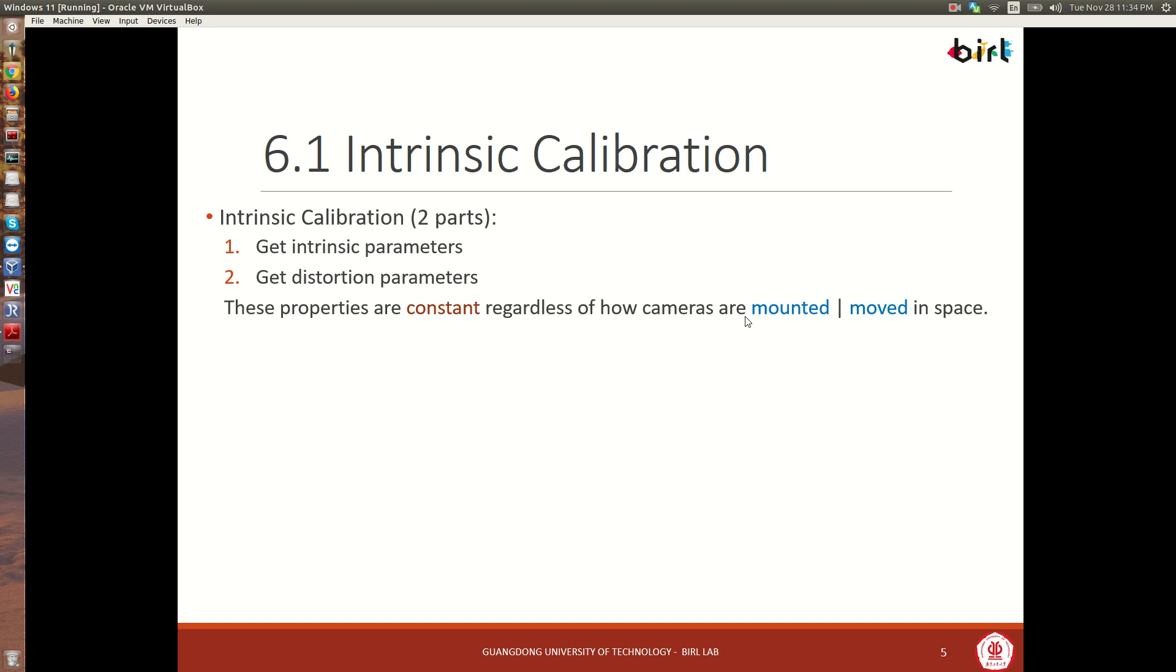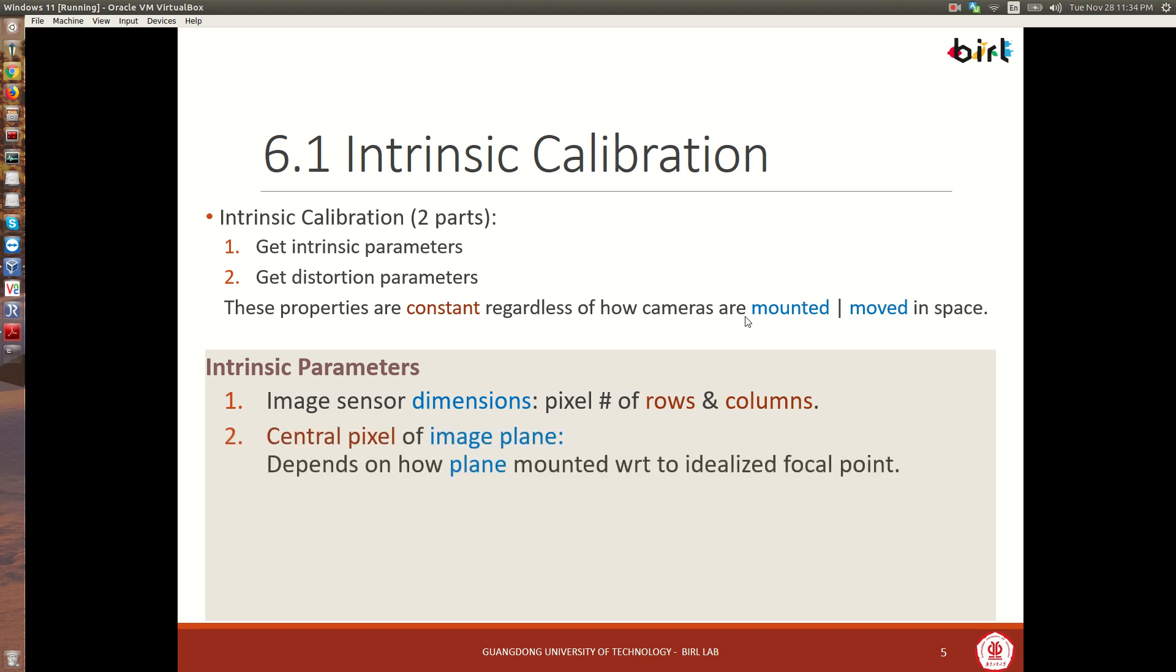In the intrinsic calibration, we're going to first find what we call the intrinsic parameters. And secondly, we're going to find the distortion parameters. Note that these properties don't change even if we move the camera or we mount it in different locations. In the intrinsic parameters, we will know the image sensor dimensions. That's the number of pixels per row and columns. We will know also their width and their height, which may not necessarily be equal. And we use that information, then, to find other things like what's the central pixel of the image plane.